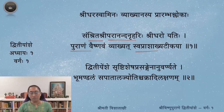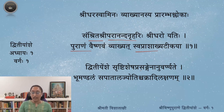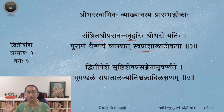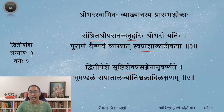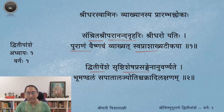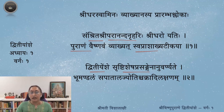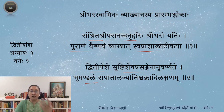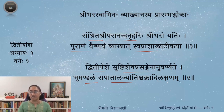He gives one shloka for the Amsha itself. Dvitiye Amshi Srishti Shesha Prasangena Bhumandalam Sapatala Jyotish Chakra Adilakshanam Anuvarnyate — as a supplement to what is left over in the Srishti explained before, as a supplement in the context of explaining the rest of the Srishti, the second Amsha describes the Samsthanam of Bhoomi, along with Patala and the Jyotish Chakram, the Grahanam Chakram. Iti Shridharaswamina uktam.